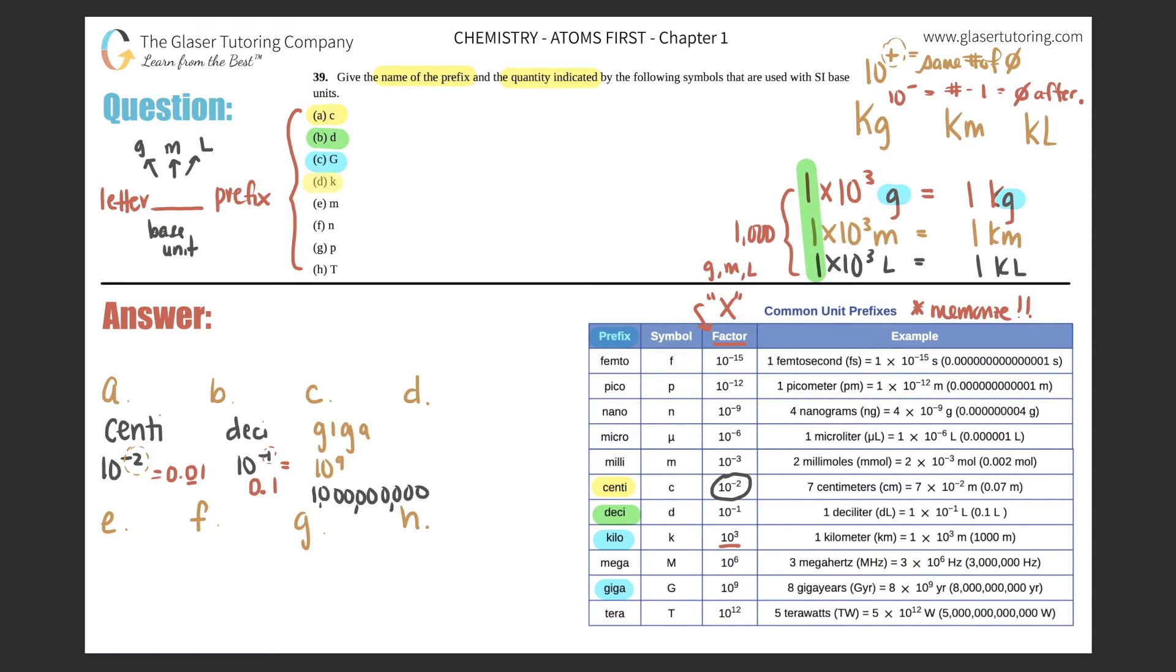Letter d, lowercase k—lowercase k is what I highlighted before. That is kilo. Kilo is always 10³. It's a positive number, so this equals one, two, three—the number is the same as the zeros. This is a thousand.